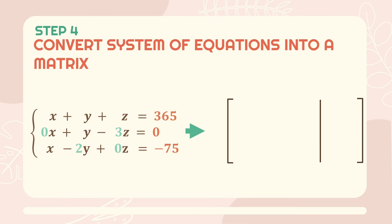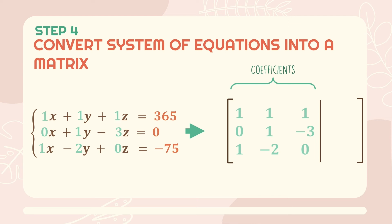The first thing you're going to do is turn this into a matrix. Inside the matrix, you'll write only the coefficients — the numbers in front of the variables — on the left side of the vertical line. If there is no number in front of a variable, it has a coefficient of 1. On the right side of the vertical line, you write the constants. Since our system is already in the proper order, we write each value in its respective row and column.